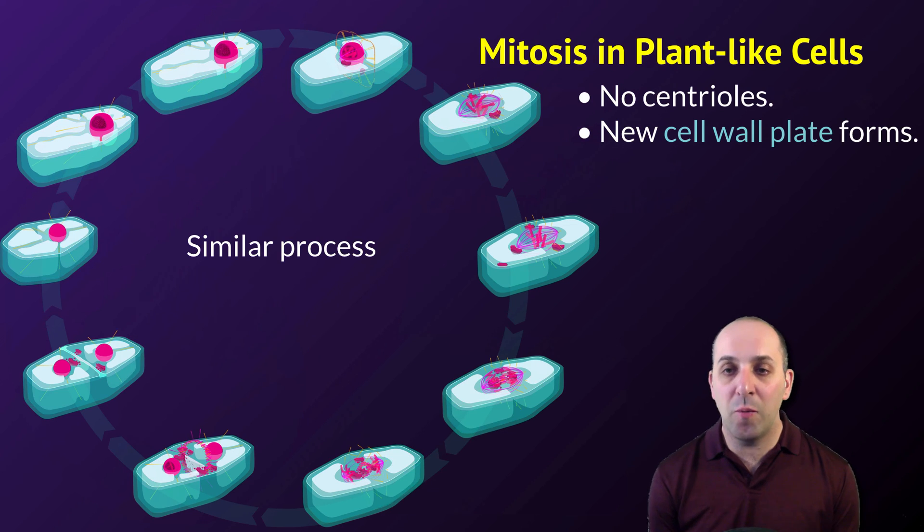Mitosis in plant-like cells is almost identical, with the main differences being that plant-like cells do not possess centrioles, though they'll still produce a mitotic spindle, and plant-like cells need to produce a new partition of the cell wall separating the two daughter cells at the end of cytokinesis.